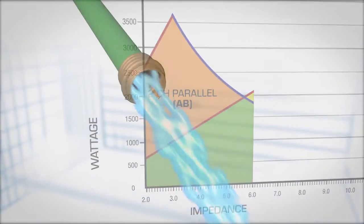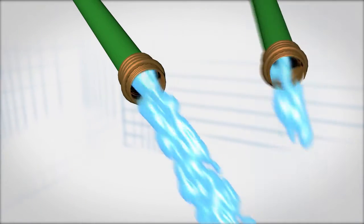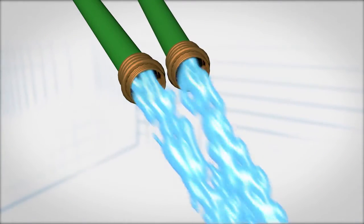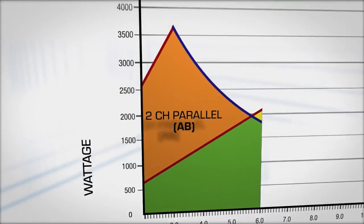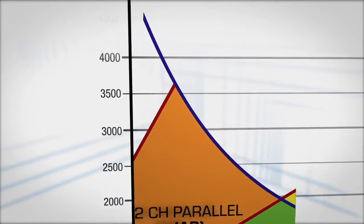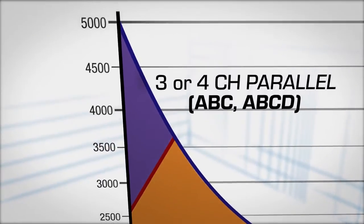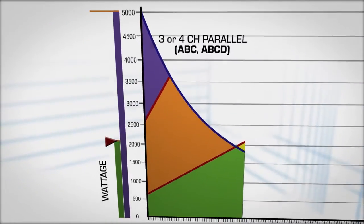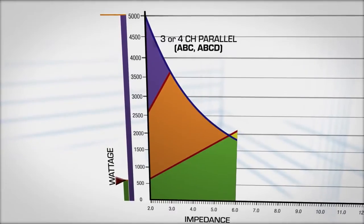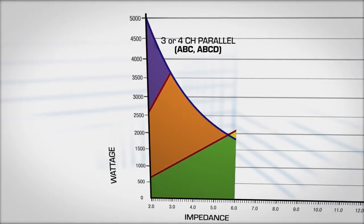In the garden hose analogy, parallel mode is like adding an additional water hose of the same pressure. The total volume of water is doubled or tripled or even quadrupled. You can see that running three or four channels in parallel provide significantly more power to loudspeakers with lower impedances, like multiple subwoofers connected together.